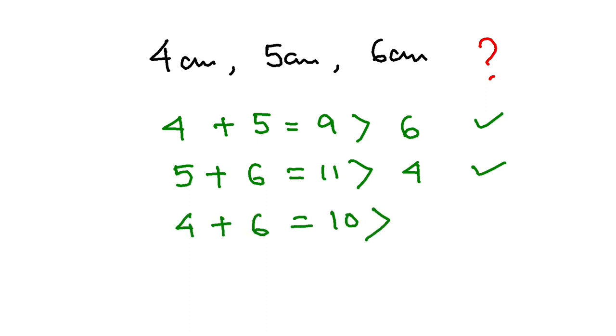And I have 4 plus 6, that's 10, and this is also greater than 5. So this is also true. That means you can have this triangle having sides 4 centimeters, 5 centimeters, and 6 centimeters.